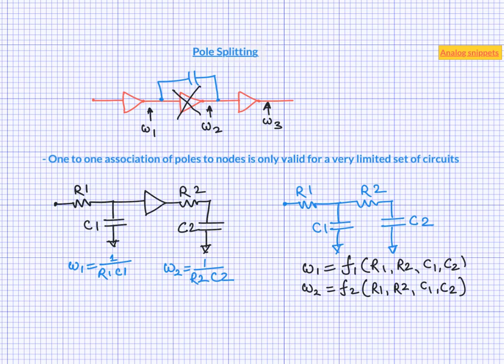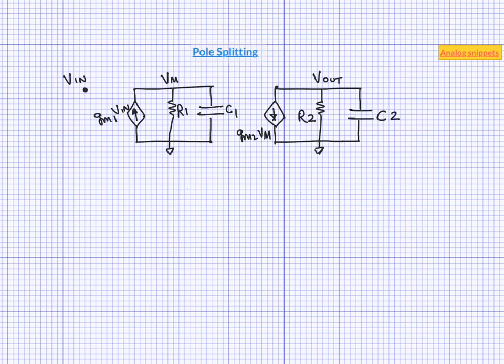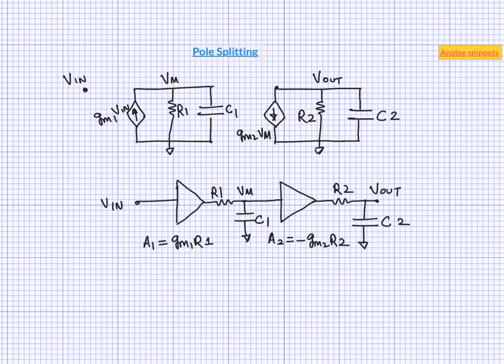So now let us go back to Miller compensation and try to make sense of pole splitting. This is the model of two stage uncompensated amplifier. Now we can simplify this circuit somewhat by replacing the current source and the resistor by its Thevenin equivalent. In this equivalent form, it is easy to see that this is similar to the RC circuit isolated by ideal voltage buffers.